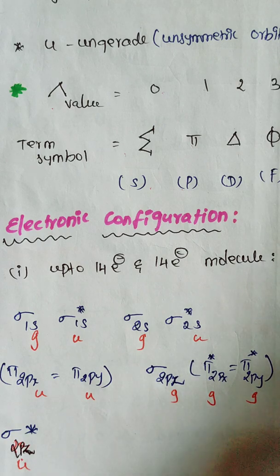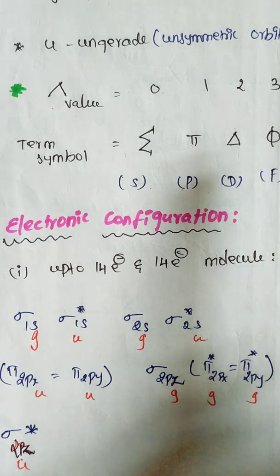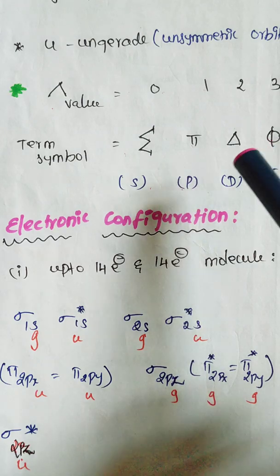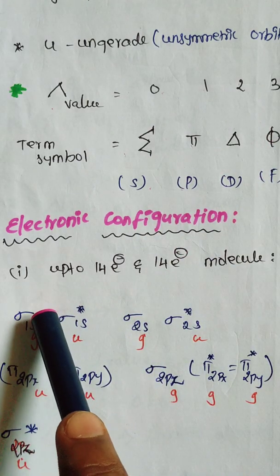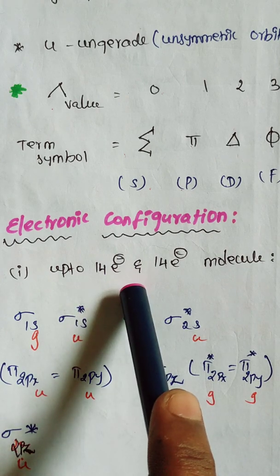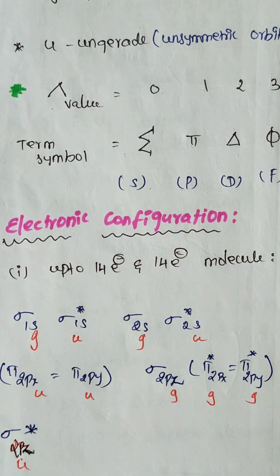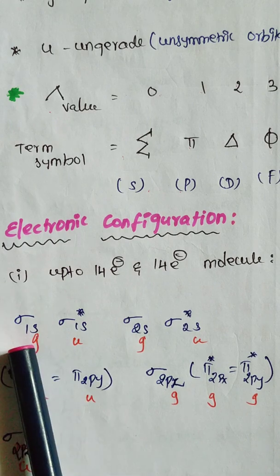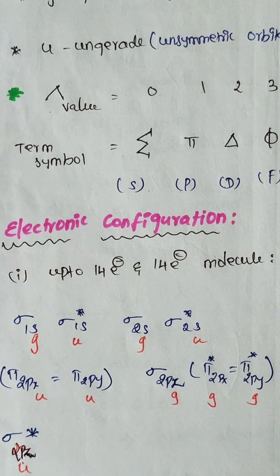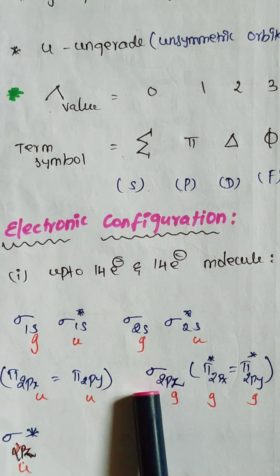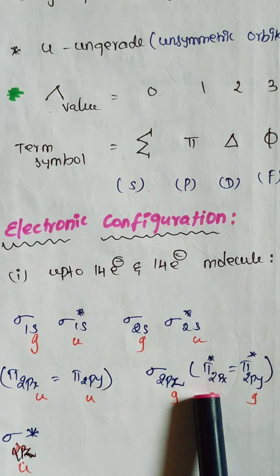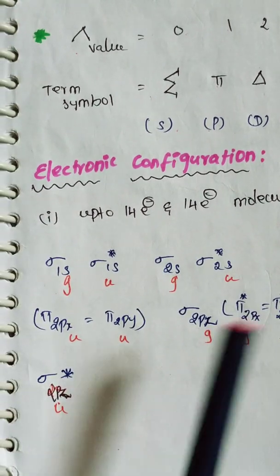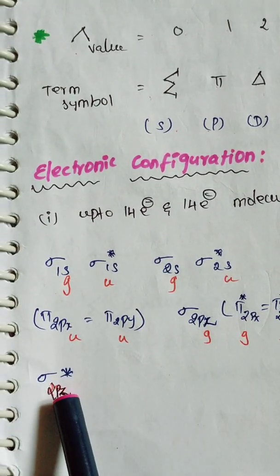Based on the electronic configuration, there are two different configurations to consider. The first electronic configuration applies to up to 14 electrons — that is, for molecules with 14 or fewer electrons. The order is: sigma 1s, sigma* 1s, sigma 2s, sigma* 2s, then pi 2px equal to pi 2py, then sigma 2pz, then pi* 2px equal to pi* 2py, and sigma* 2pz.